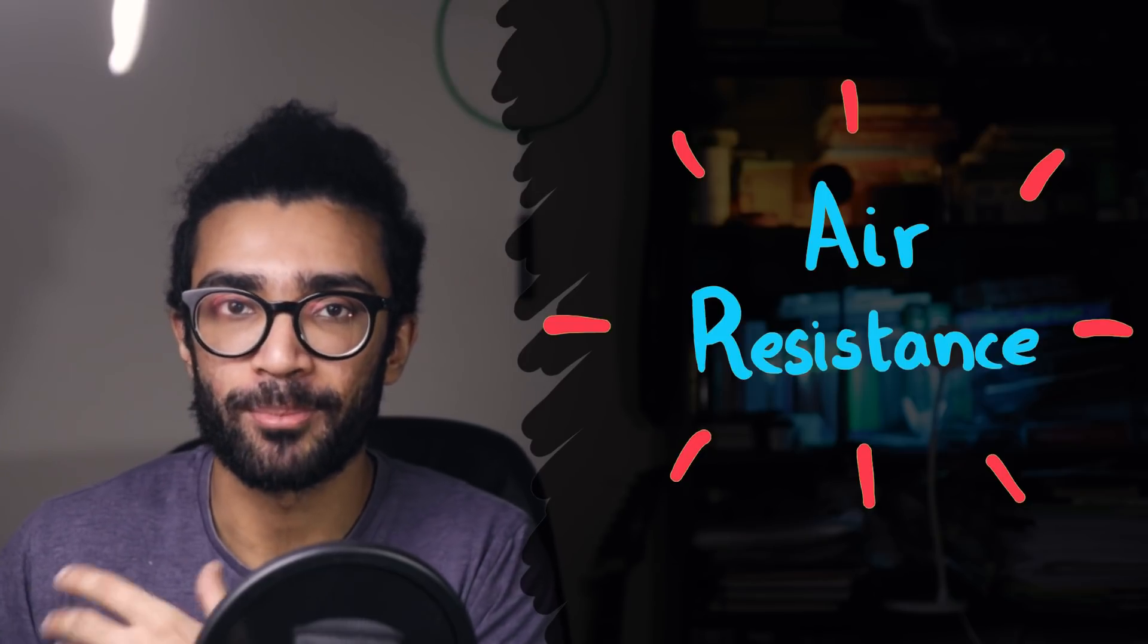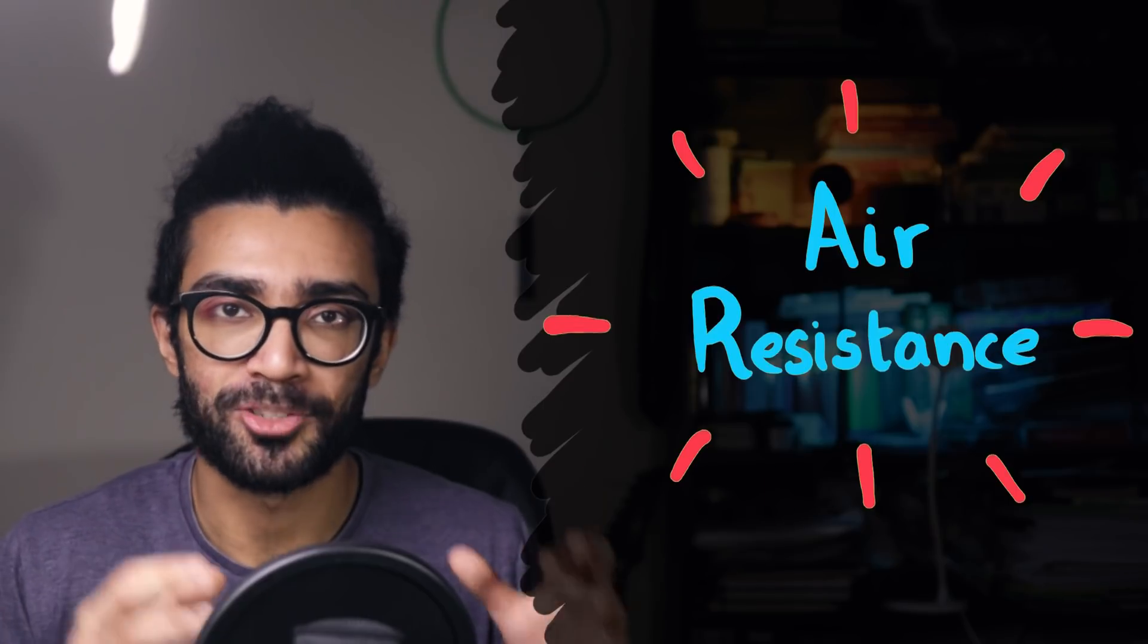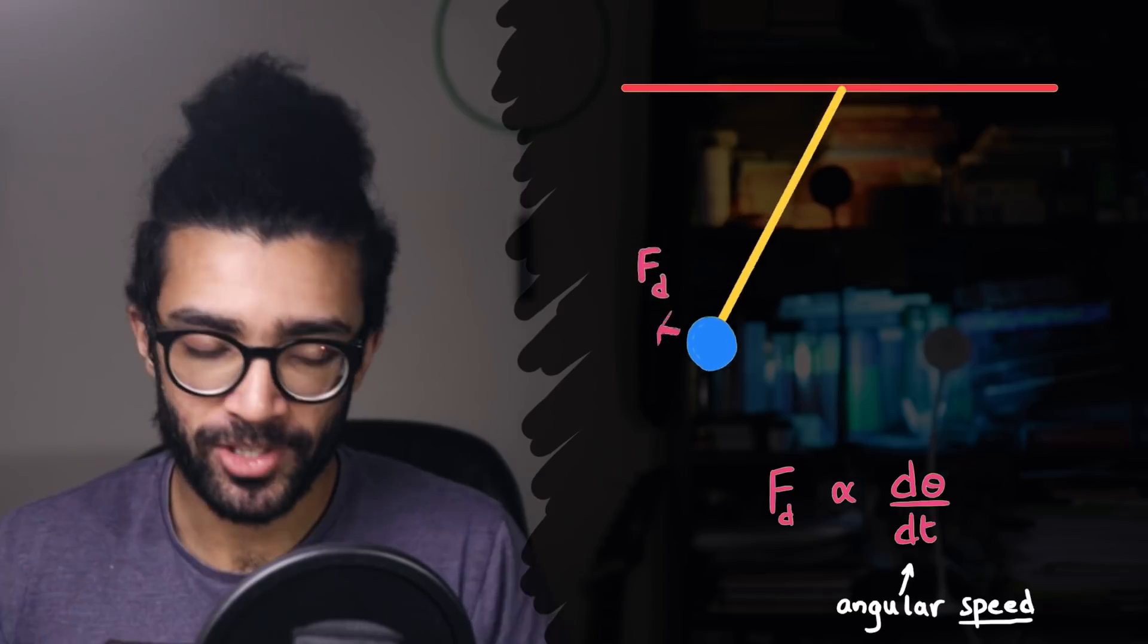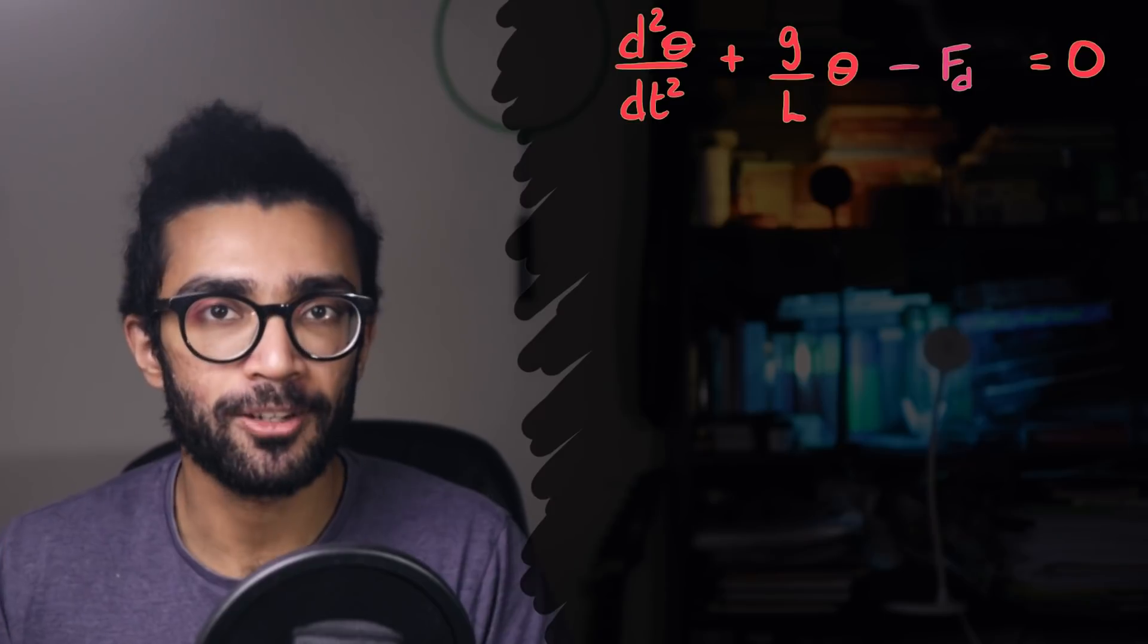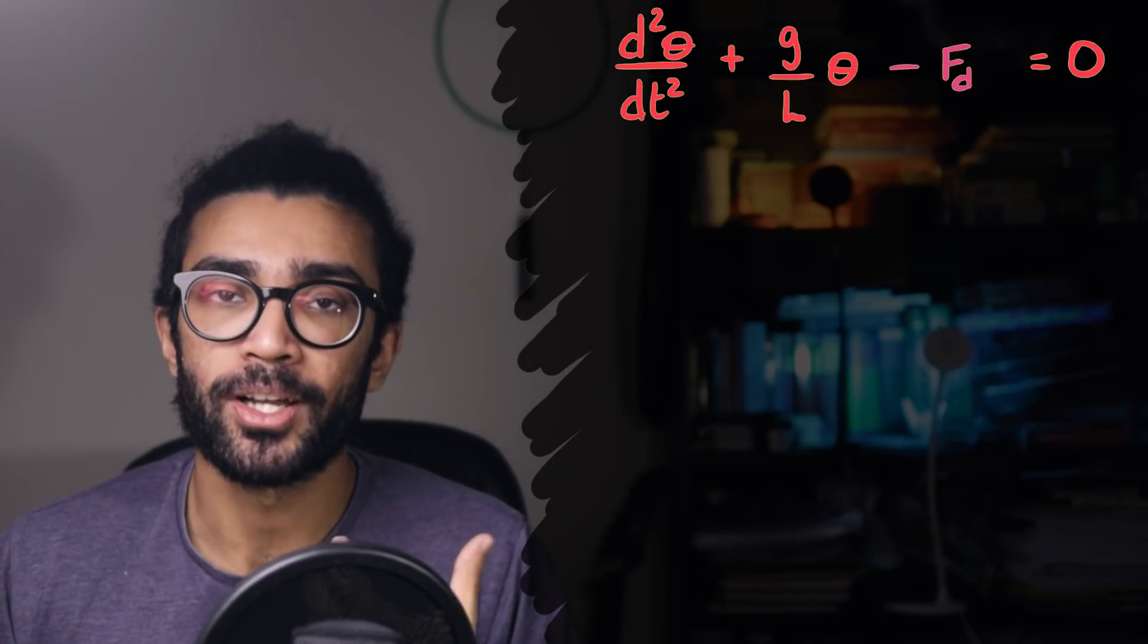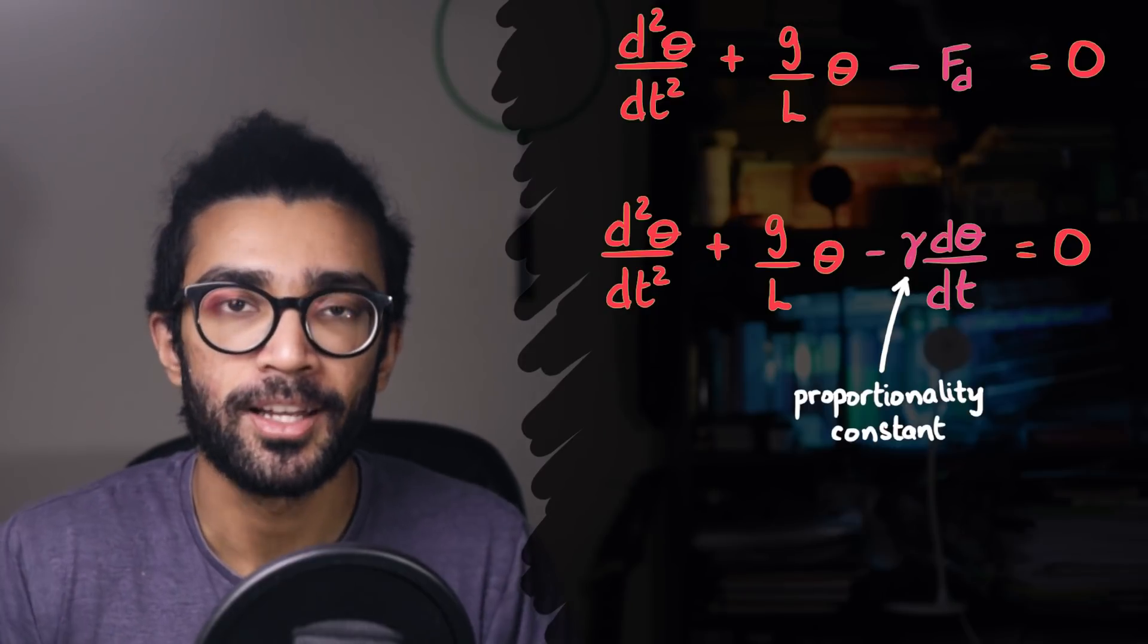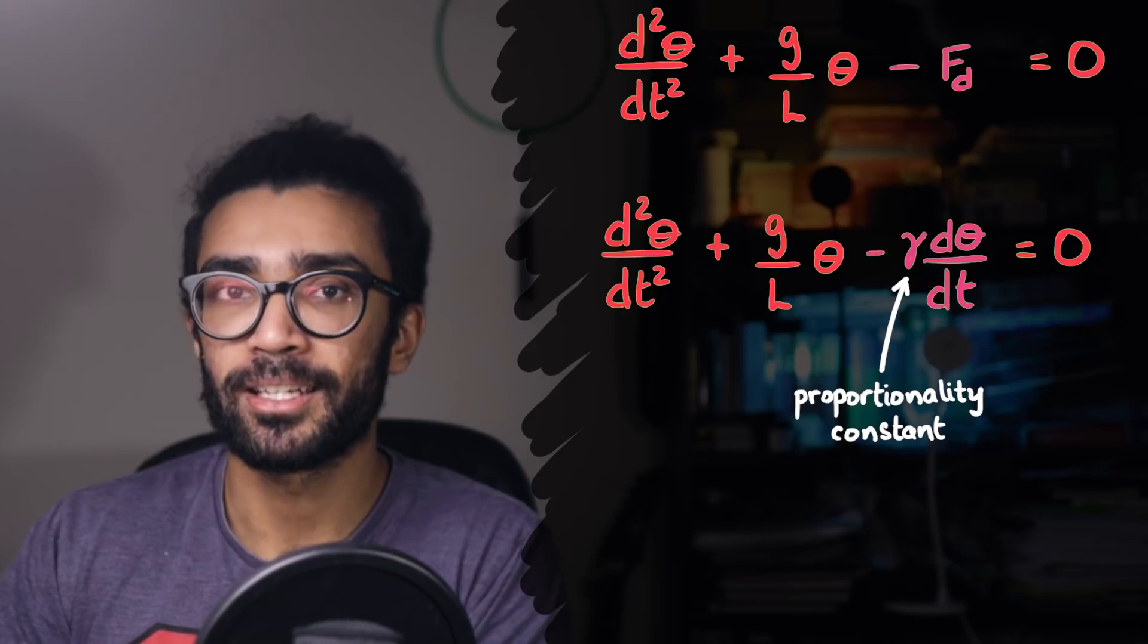Well, we do exactly what we did earlier. We assume that the drag force is directly proportional to the speed of the pendulum. Essentially, we're just going to add another term into our equation of motion that now accounts for the drag force acting on our pendulum. And we're going to say that this drag force is equal to gamma, the proportionality constant, multiplied by the angular speed of the pendulum. But there's a couple of things to think about here.